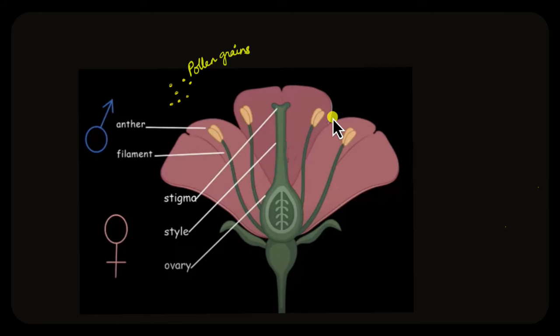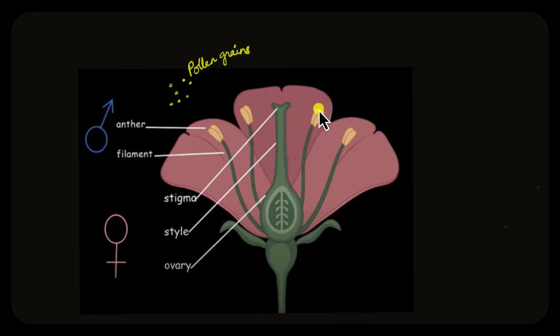In this video, let's try to answer the question: how are fruits and seeds formed? Like other videos in this unit, let's begin with the flower, which houses the male and female reproductive structures in plants.